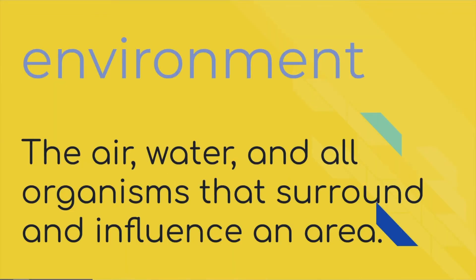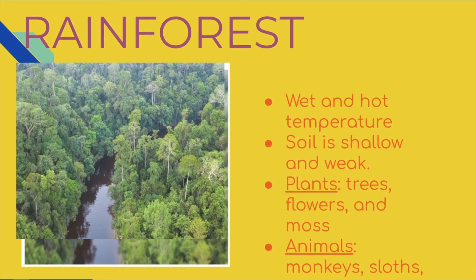During this unit, we learned about different environments. An environment is what is made up of air, water, and all the organisms like plants and animals that surround and influence an area. There are many different kinds of environments. Some are wet and hot, some are cold and dry, and some are even hot and dry. Let's look at some different environments and their characteristics.